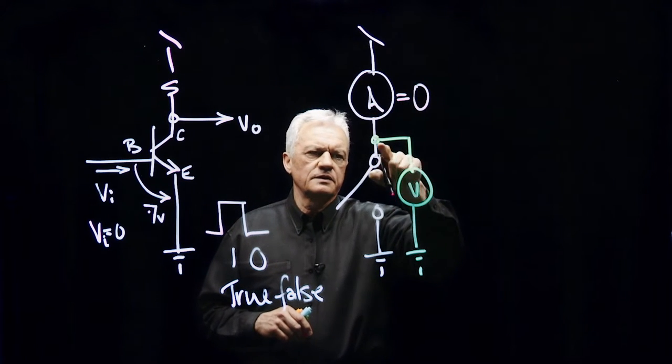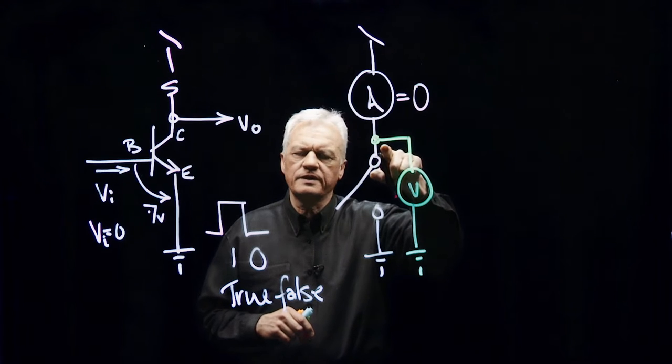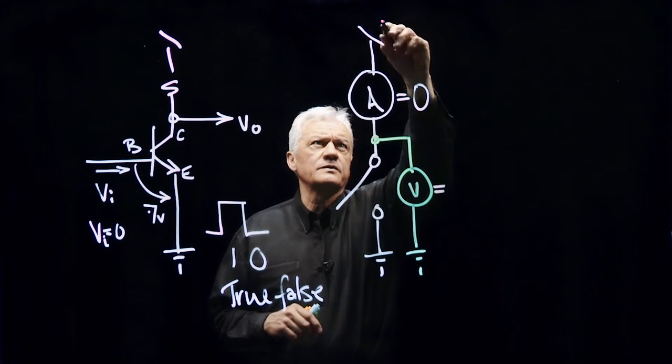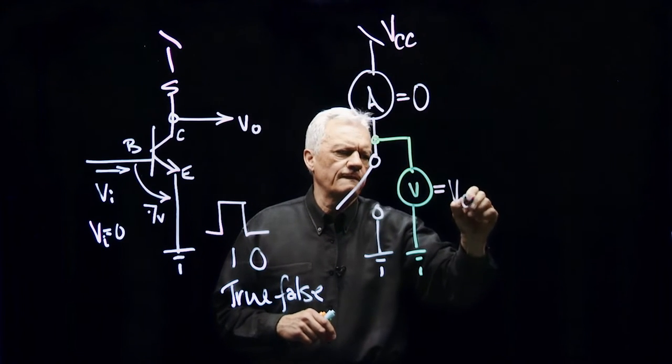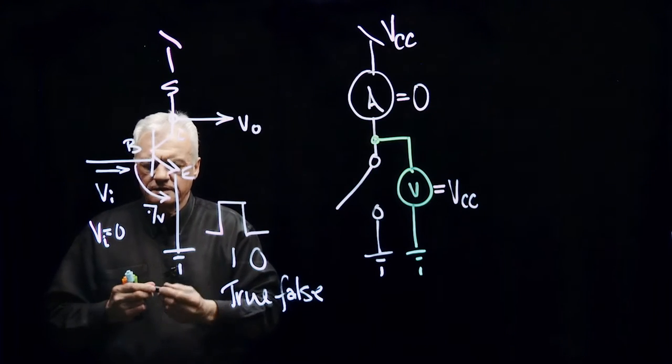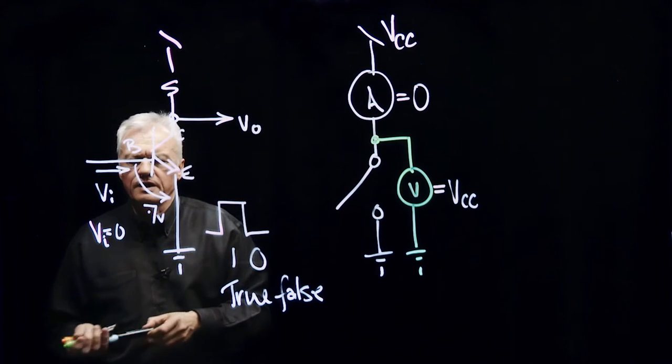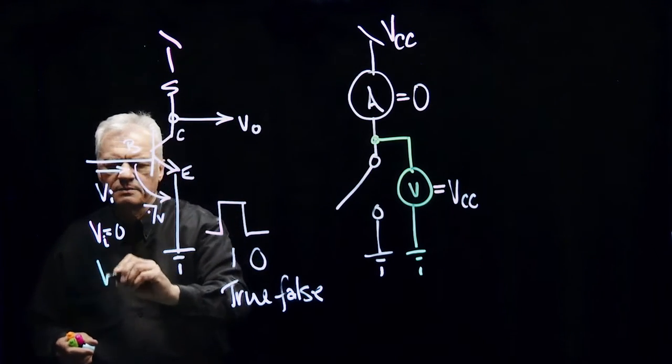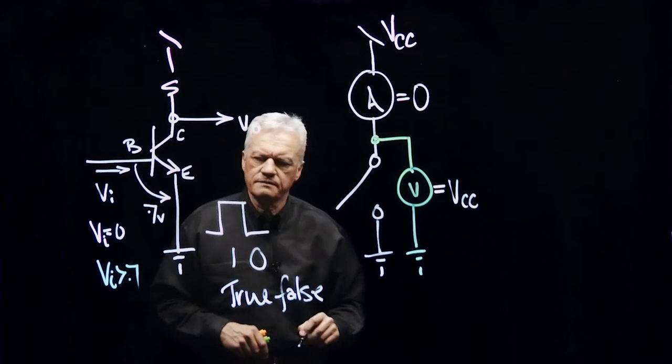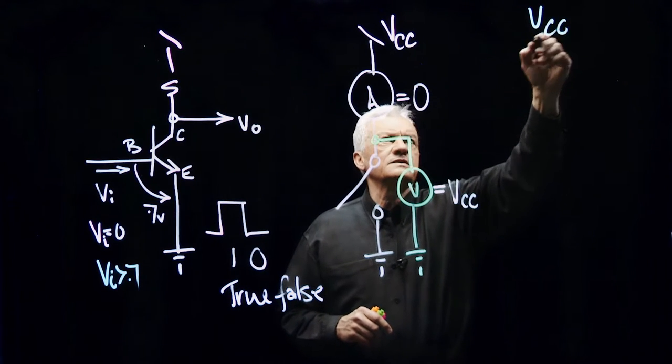However, the pressure I feel at this point here across the collector emitter will be equal to the voltage I have up there. When I turn this transistor on by putting a signal in there, by putting a voltage greater than 0.7, in this case here, then my switch configuration looks like this.